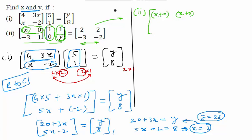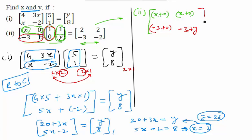Now moving to the second row, multiply it with the first column: minus 3 corresponds with 1 and 1 corresponds with 0, giving minus 3 plus 0. Then multiply the second row with the second column — that element goes at position second row, second column — giving minus 3 plus y. It is already given that this matrix equals 2, 2, minus 3, minus 2 on the right-hand side.